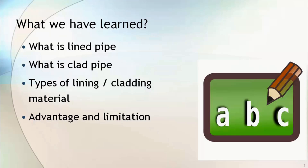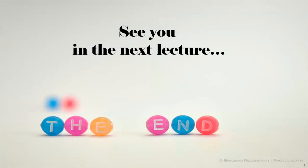Let's summarize what you have learned in this lecture. You learned about lined pipe and clad pipe, the difference between lining and cladding, the types of lining and cladding materials that can be used with carbon steel, and the advantages and limitations of both clad and lined pipes. See you in the next lecture.